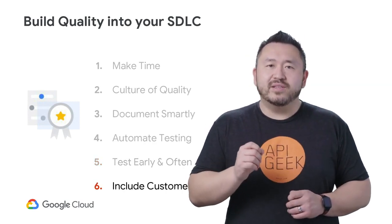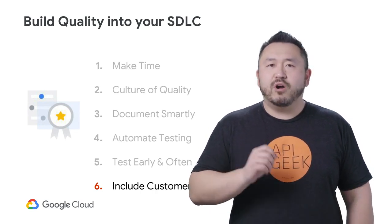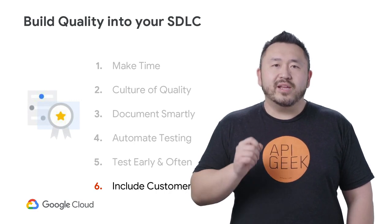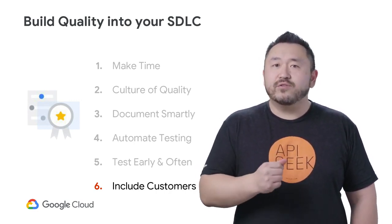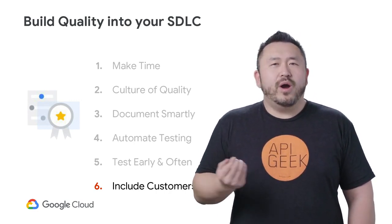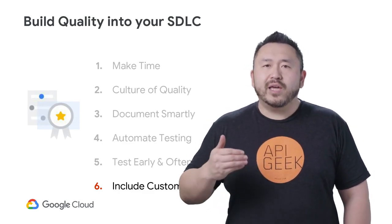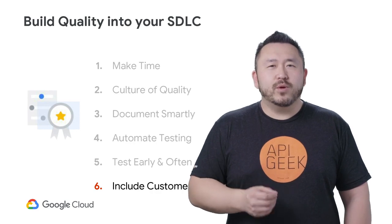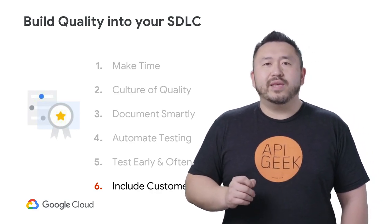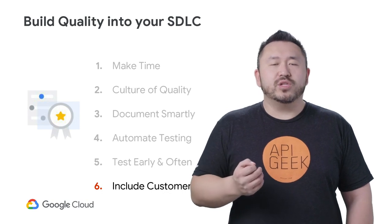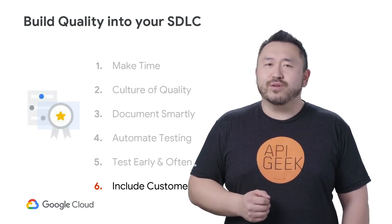Finally, and sixth, include your customers in the process. Your customers and developer community can help ensure quality. Invite them to user testing at the end of the sprint or have them play with an alpha or beta version of your APIs. Building a pilot customer group can be one of your most valuable assets. Listen to what they have to say and the issues they report to you. Everyone should be involved with quality assurance.